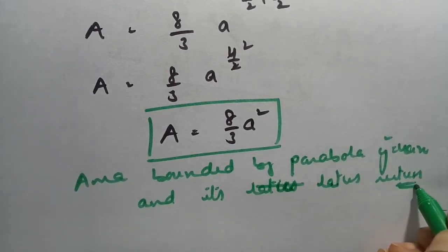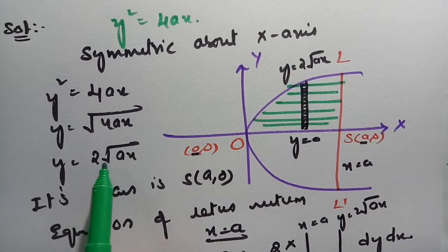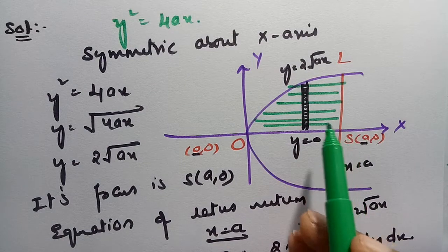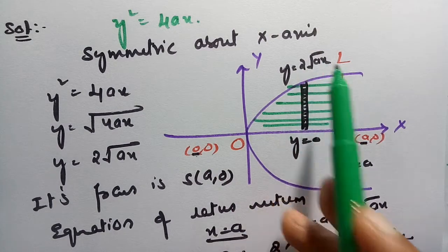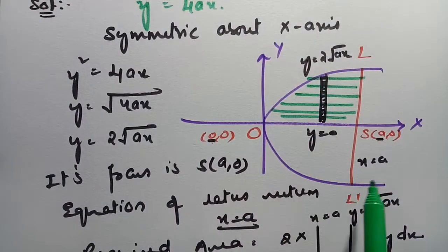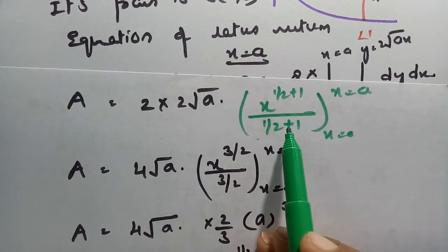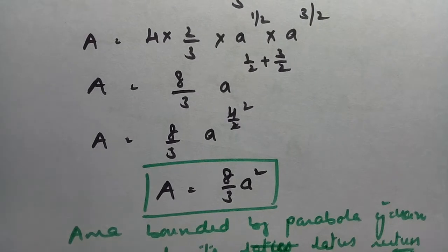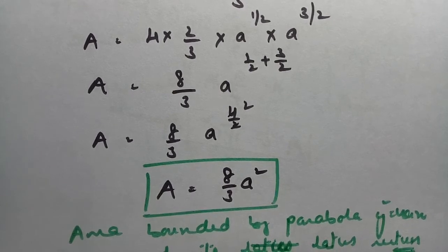To recap: the parabola y² = 4ax is symmetric about the x-axis. In terms of y, the equation gives y = 2√(ax). With a strip parallel to the y-axis sliding from x = 0 to x = a, and y limits from 0 to 2√(ax), multiplying by 2 gives the total area. Integrating with respect to y then x, the area of the parabola and its latus rectum = 8a²/3. Keep practicing — nothing is impossible. Please subscribe, share, and leave a comment. Thank you!